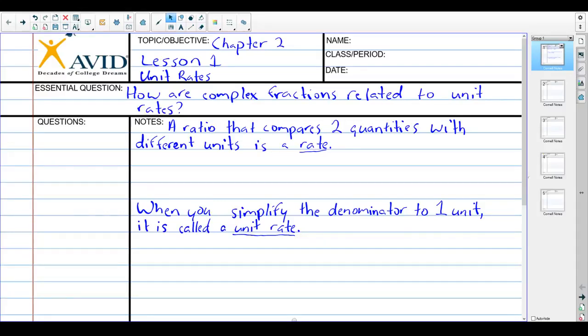If you'd like to leave some room here, we're actually going to come back later and do Lesson 2, Complex Numbers. So you might want to leave some space here to write some more for our objective. Our essential question for the next two lessons: how are complex fractions related to unit rates?